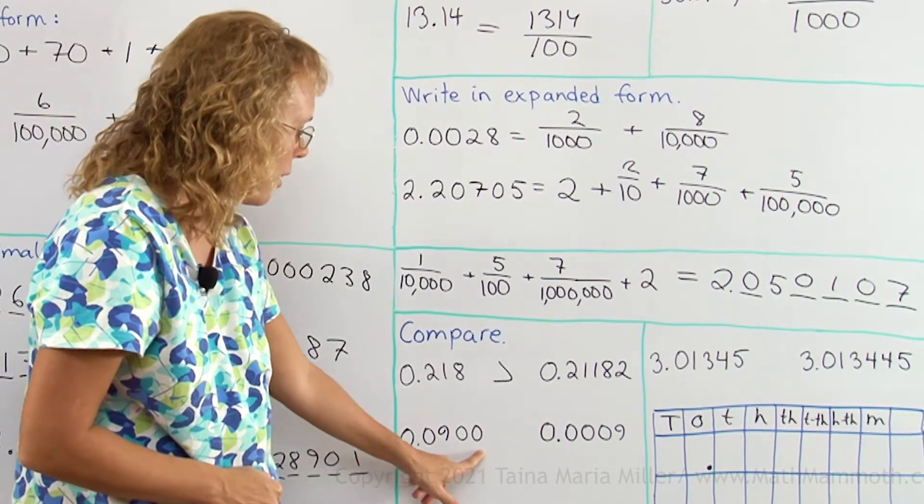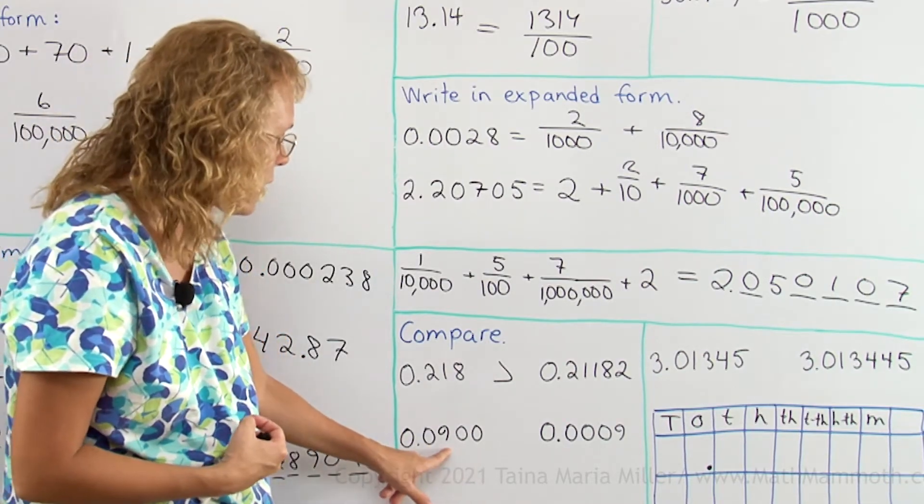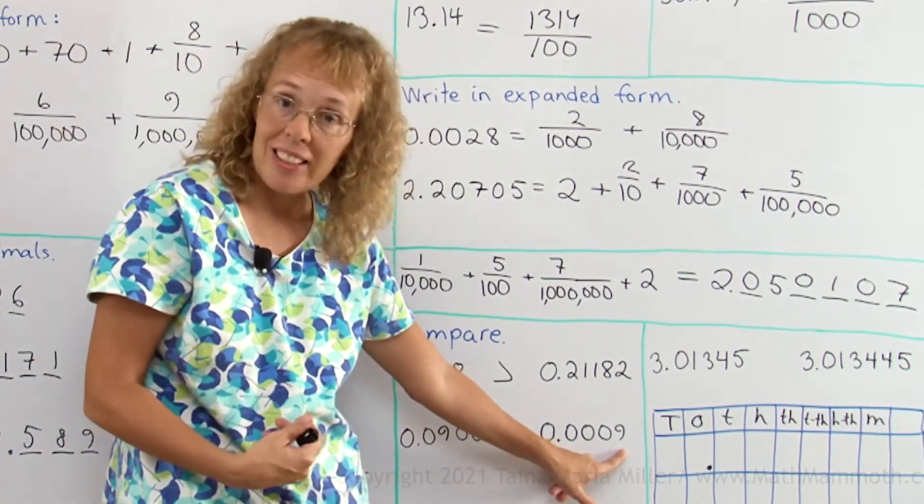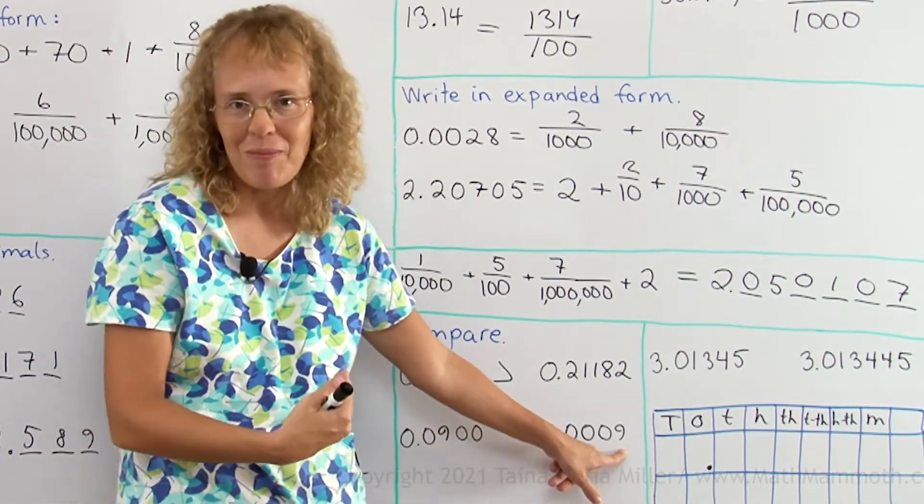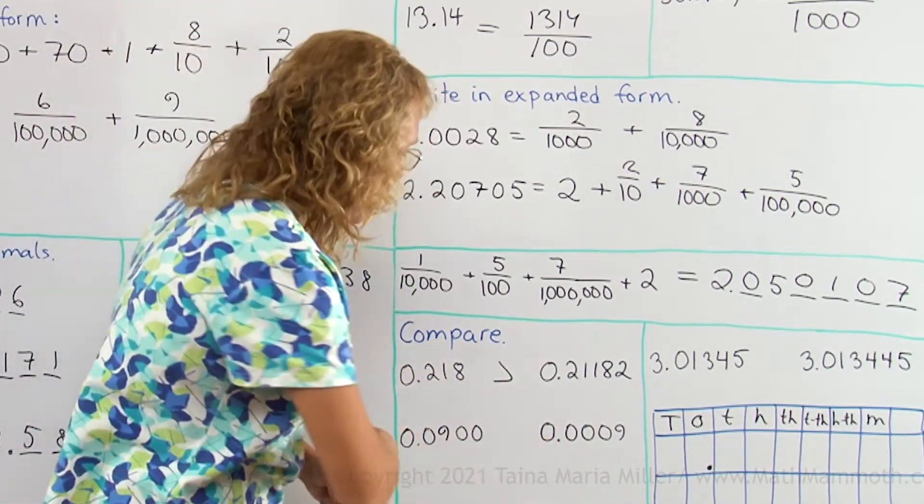And now, this last place here is ten-thousandths place. So this number is nine hundred ten-thousandths. This number is nine ten-thousandths, so which is more? Now it is very easy. This one has more ten-thousandths than this one, so it is bigger.